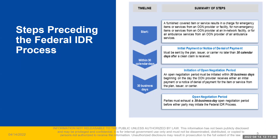The departments have received several questions regarding applicability of the federal IDR process and the open negotiation period. The first question is: how does the non-initiating party know if the items or services are eligible under the No Surprises Act if there's no way to know anything other than the services and CPT codes?